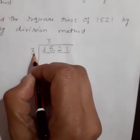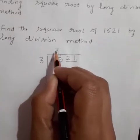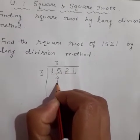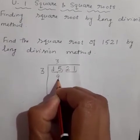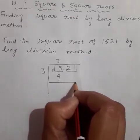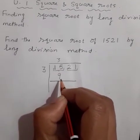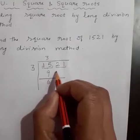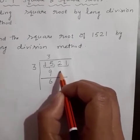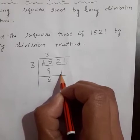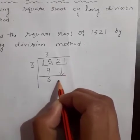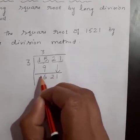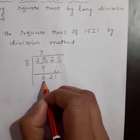We multiply the divisor and quotient: 3 × 3 = 9. Write the product just below the first period. Find the remainder, which is equal to 6. Then bring down the next pair of digits, that is 21, to the right of the remainder. Our new dividend is equal to 621.